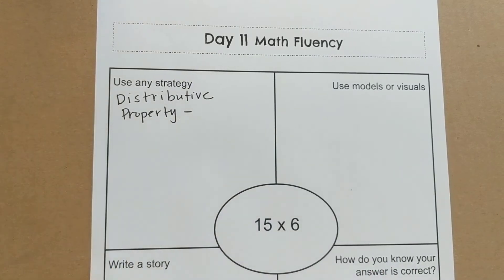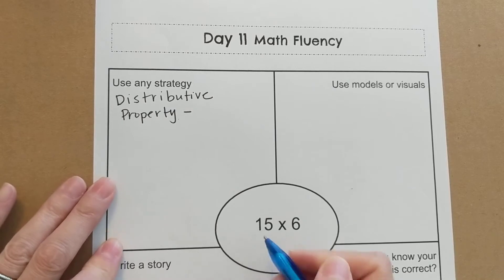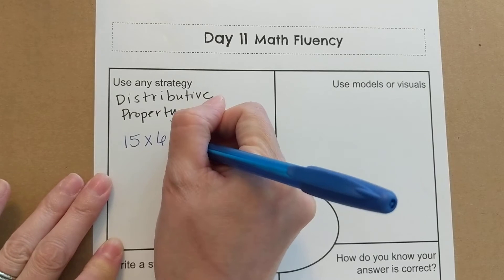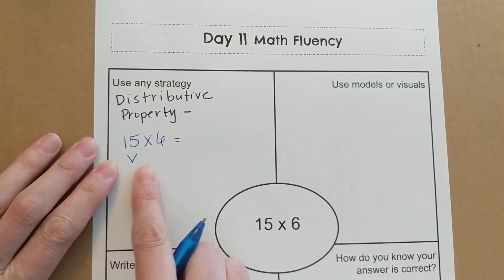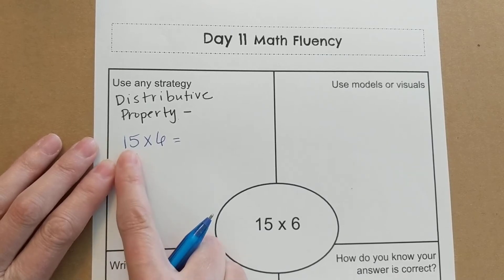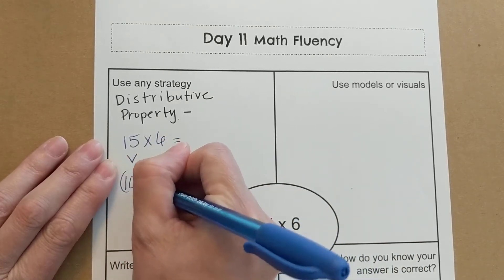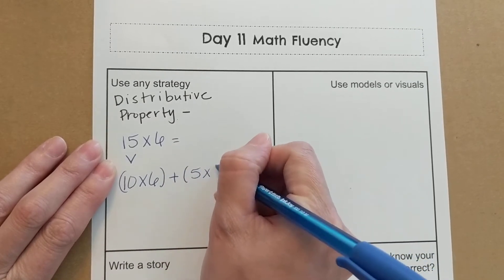Alright, so for the distributive property, we are going to take 15 times 6. And I'm going to break apart the 15. And two factors that we know really well that we can multiply by easily are 10 and 5. So 15 could be broken up into 10 times 6 plus 5 times 6.